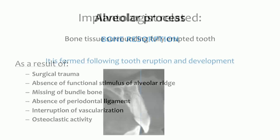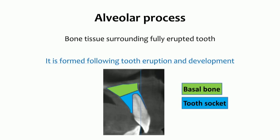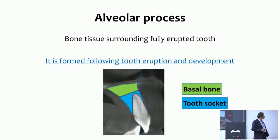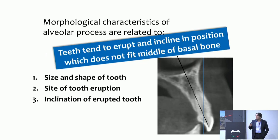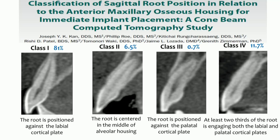To better understand resorption patterns, we need to know anatomy and physiology. The alveolar process is the bone surrounding the fully erupted tooth, and its morphological characteristics are related to the size and shape of the tooth, the site of eruption, and inclination of the erupted tooth. Teeth tend to erupt and incline in a position that does not fit the middle of the basal bone. A paper by Joe Kane presented a classification of sagittal root position relative to the anterior maxillary osseous housing, finding that in 81% of cases the root is positioned against the labial cortical plate.